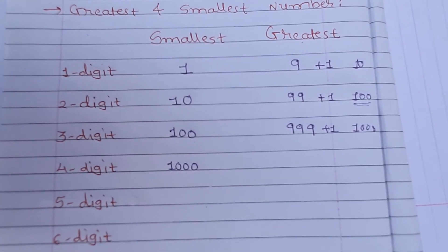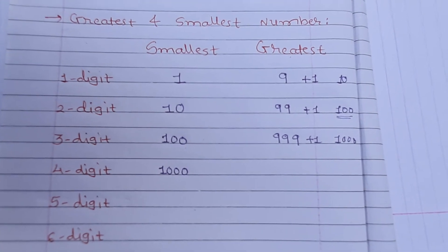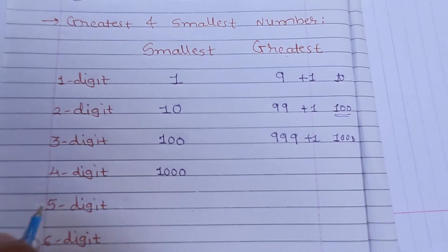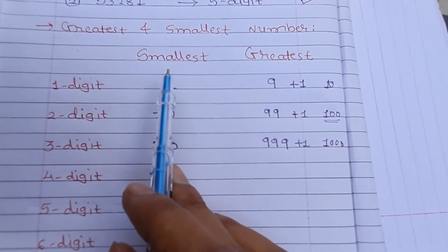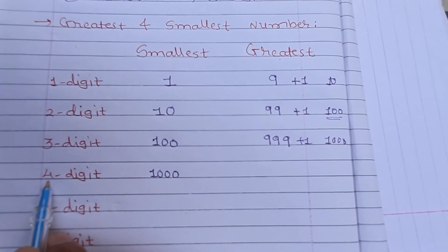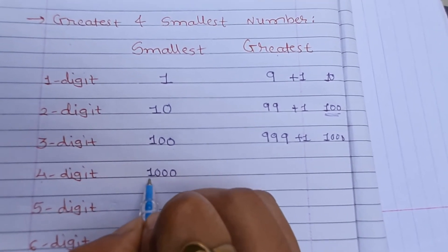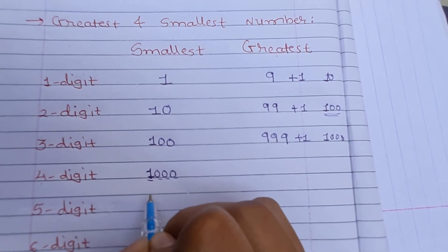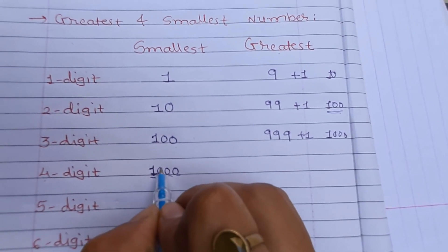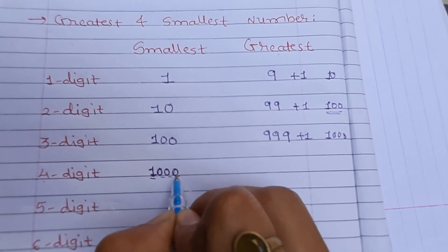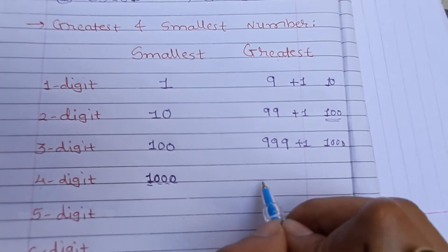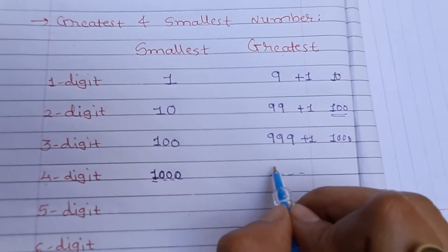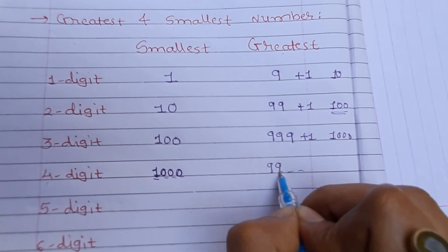Students, if you observe this pattern, you can write directly the smallest and greatest number for any digit count. For the smallest 4-digit number, the first digit is always 1 followed by the other digits as 0. For the greatest 4-digit number, all four digits should be 9, so the number becomes 9999.